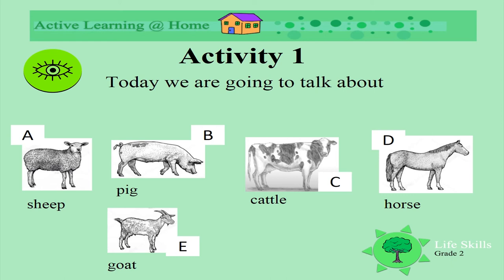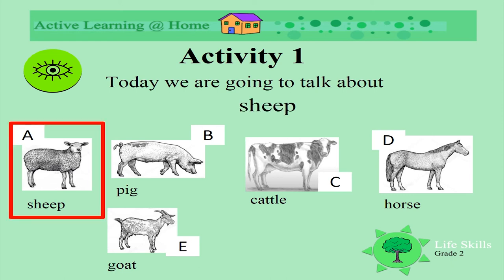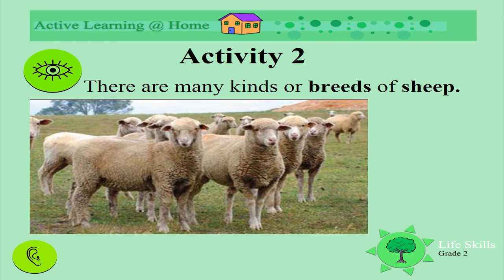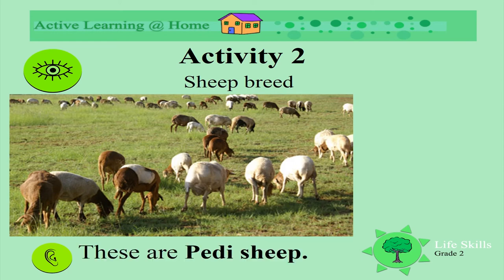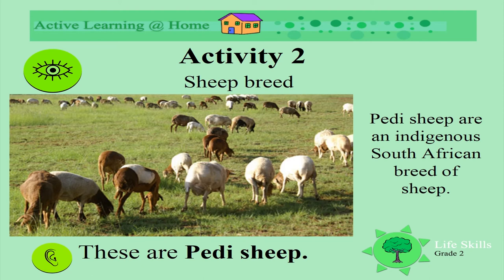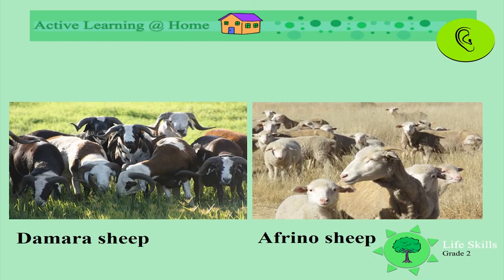Today we are going to talk about sheep. There are many kinds or breeds of sheep. This is a picture of Merino sheep. Merino is a breed. Have a look at these sheep — these are Pedi sheep, an indigenous South African breed. Here are two more breeds: Demara and Afrino. So there are many breeds of sheep.